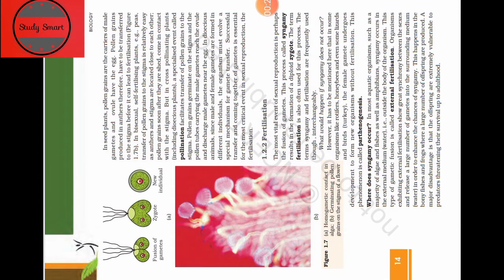In this video we are going to discuss fertilization. The most vital event of sexual reproduction is the fusion of gametes. We have seen the production of gametes in our previous video. In fertilization there is a fusion of two types of gametes, and this process is called syngamy. The result is the formation of a diploid zygote, and the term for the whole process is fertilization.